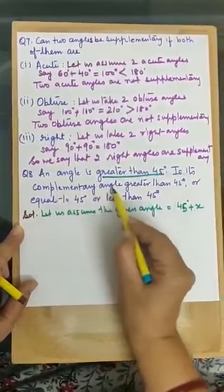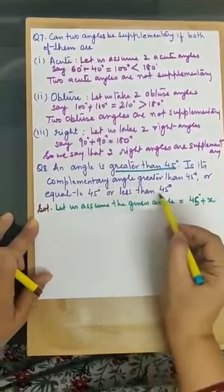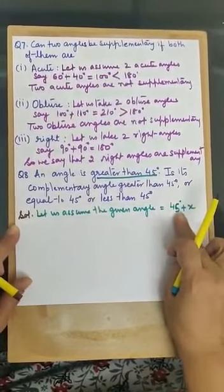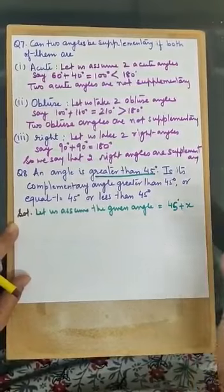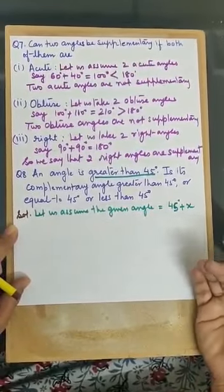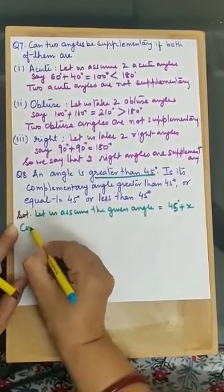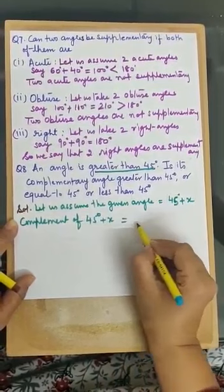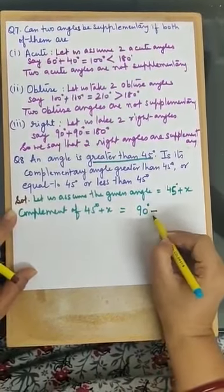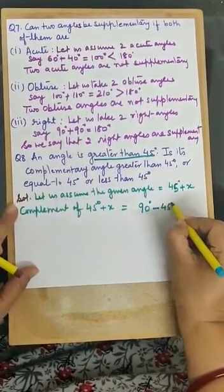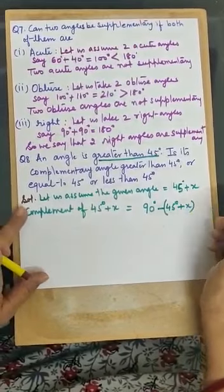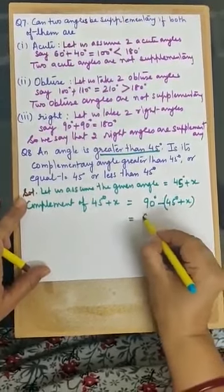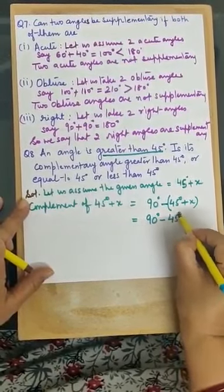The next line is: is its complementary angle greater than 45, equal to 45, or less than 45? So let us find the complement of this angle. Complement of (45 degrees + x) is equal to 90 degrees minus (45 degrees + x). When we open the bracket, it becomes 90 minus 45 degrees minus x.